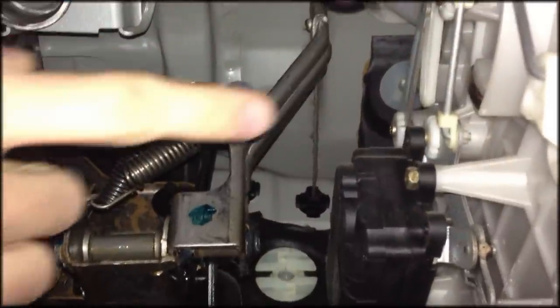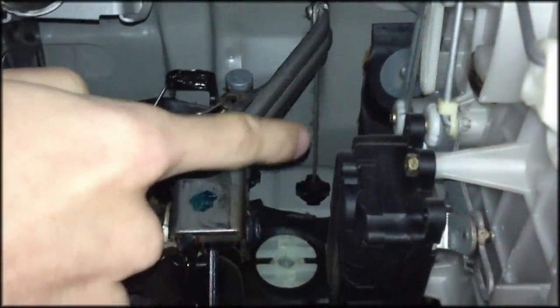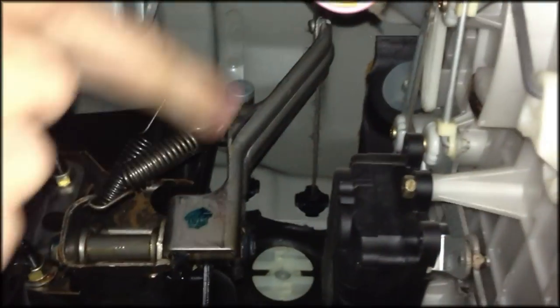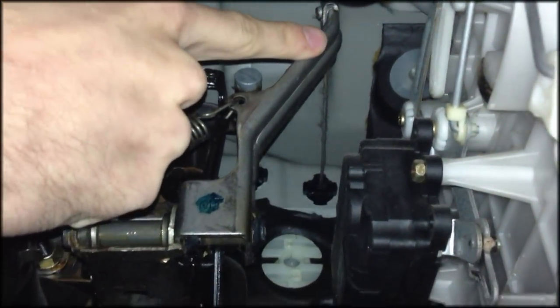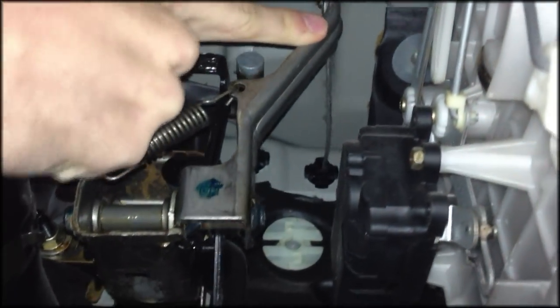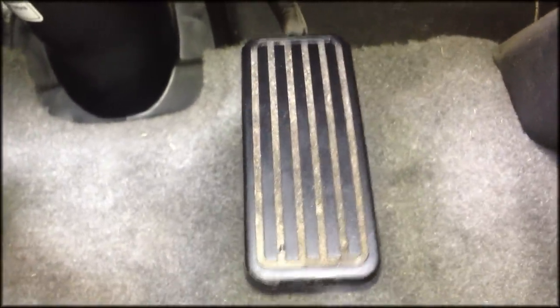So what that actuator is controlling is that cable there and that connects to this lever. So as if it were to pull in, as I do here, you can see that the gas pedal is pushed in which pulls on the throttle.